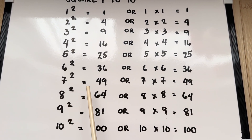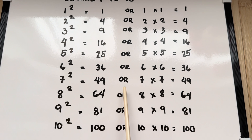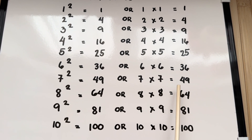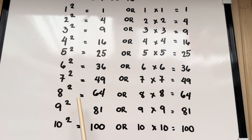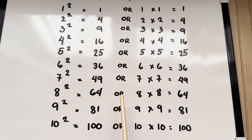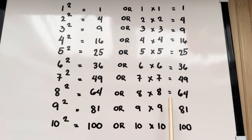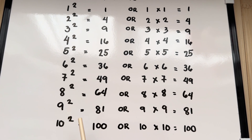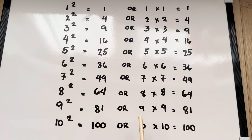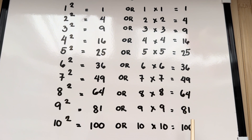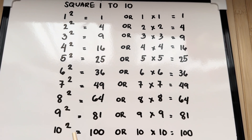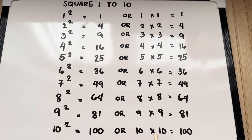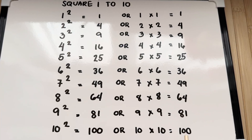7 squared is equals to 49, or 7 times 7 is equals to 49. 8 squared is equals to 64, or 8 times 8 is equals to 64. 9 squared is equals to 81, or 9 times 9 is equals to 81. 10 squared is equals to 100, or 10 times 10 is equals to 100.